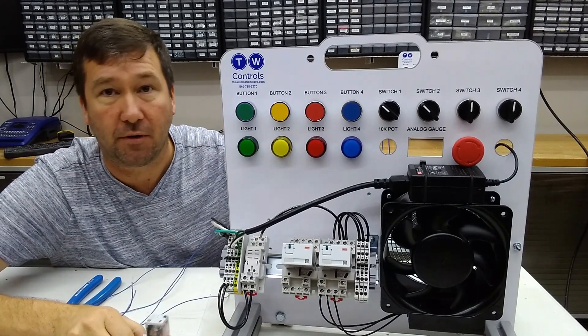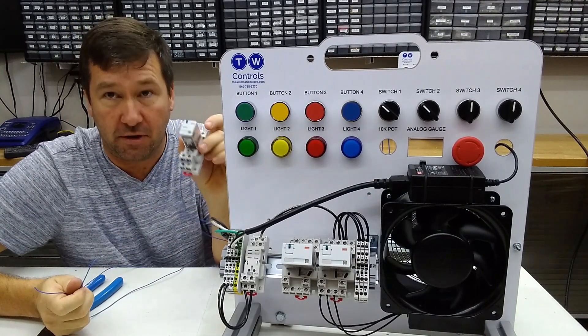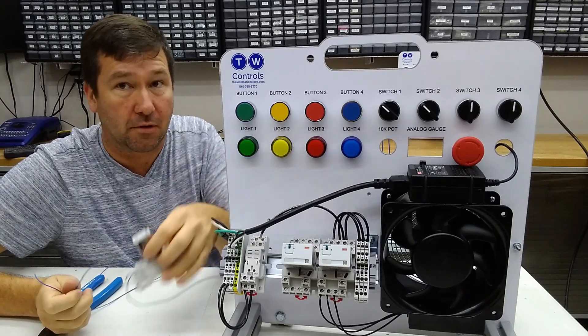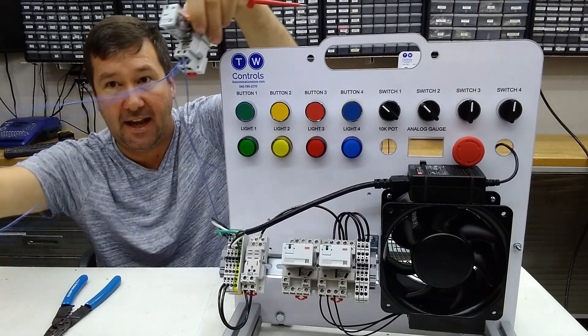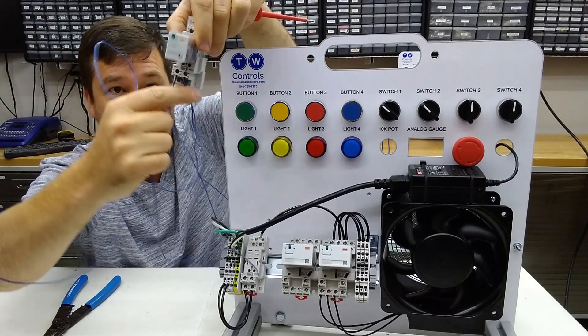Now these are 24-volt indicator lights on this trainer. So you would need to be using a 24-volt coil to do this. Okay, so I've added two wires to the same coils.